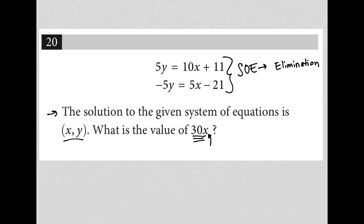But just so happens, the question is set up already without us needing to multiply anything where we can simply add the equations together and the y values will eliminate. So if I add these two equations together, I have 5y plus negative 5y, which is just 0.